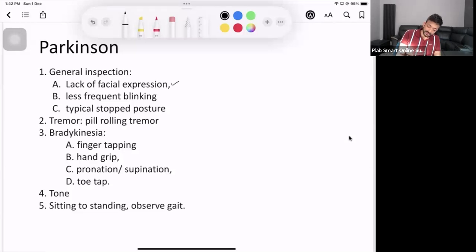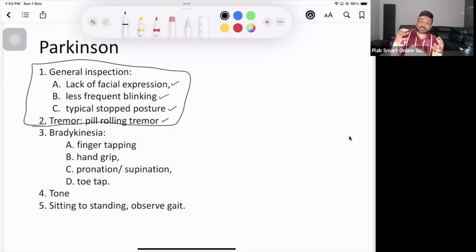First thing is inspection. There are a few things that you check on the inspection. You check for facial expression. You check for less frequent blinking. You check for typical stoop posture and you check for the pin rolling resting tremors. There is no test you have to do for these things. You just check. This is just the inspectory finding. Simply say, I'm looking for resting pin rolling tremors. I'm looking for lack of facial expression. I'm looking for typical stoop posture and I'm looking for the less frequent blinking. Lack of facial expression, less frequent blinking is why? Because of muscle rigidity. That's what you need to check. You can check the tone in the upper limb as well, where you will be able to find out if there is any lead pipe rigidity or not.